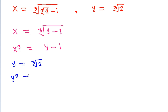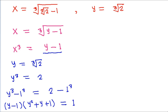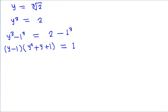So y cubed will be equal to 2, and we have to find the value of y-1. So y cubed minus 1 cubed will be equal to 2 minus 1. And y cubed minus 1 cubed equals (y-1) times (y squared plus y plus 1), which equals 1, and we get y-1 equal to 1 divided by (y squared plus y plus 1).